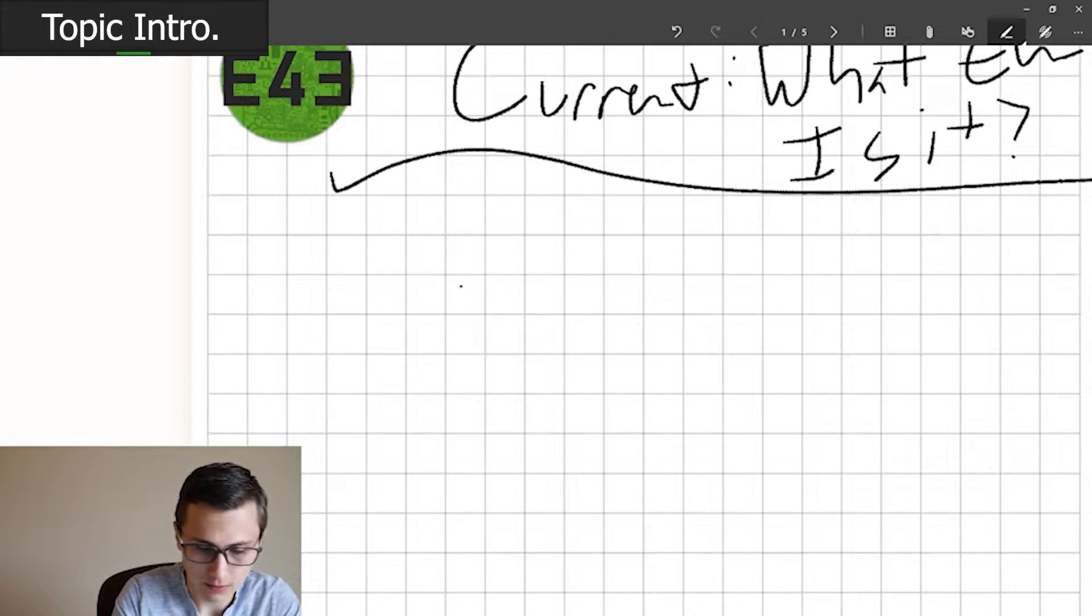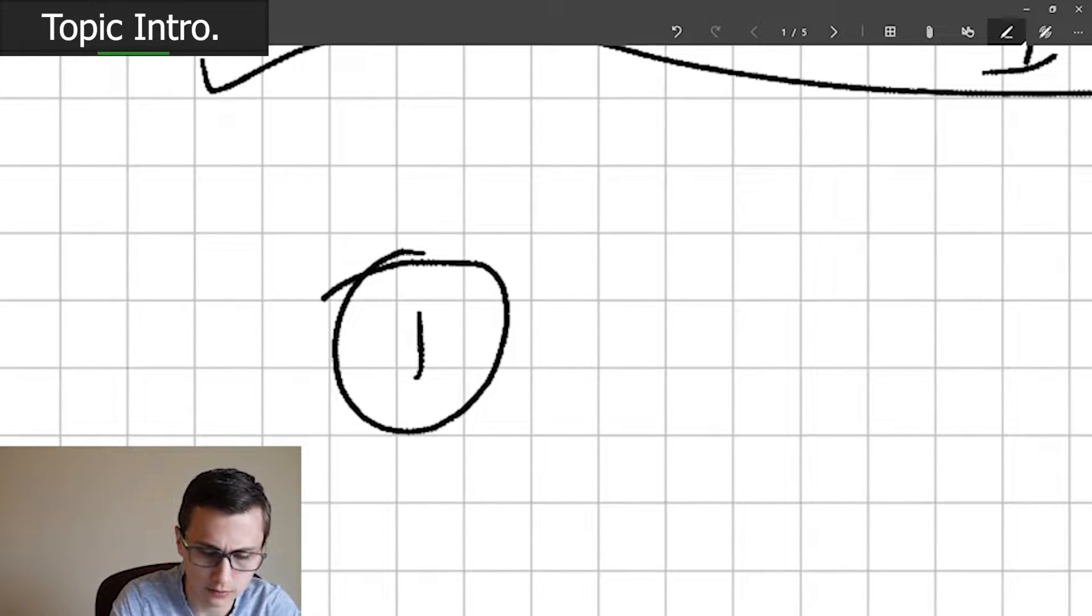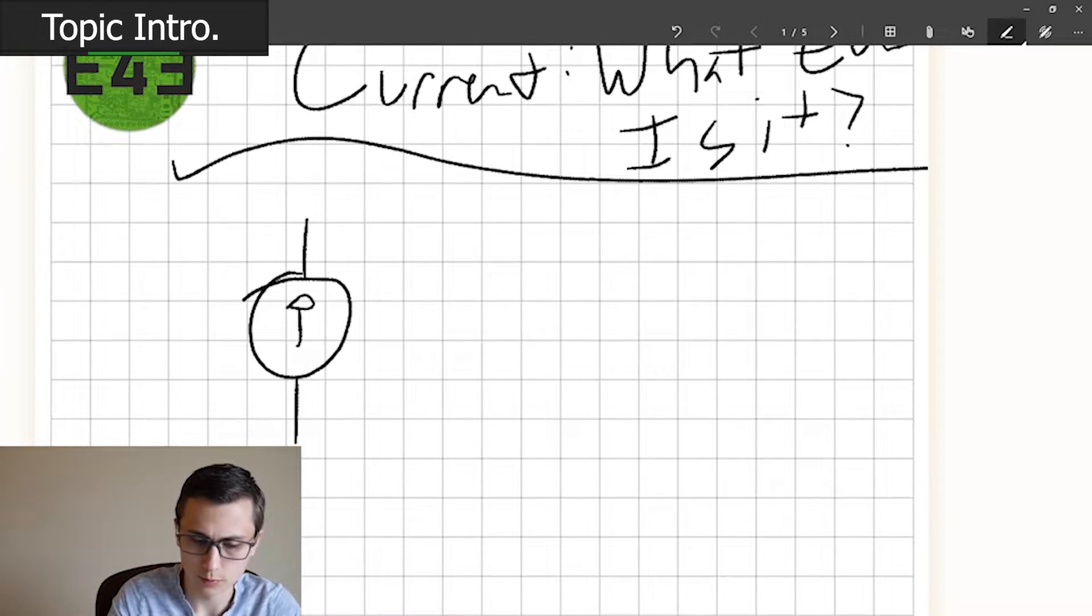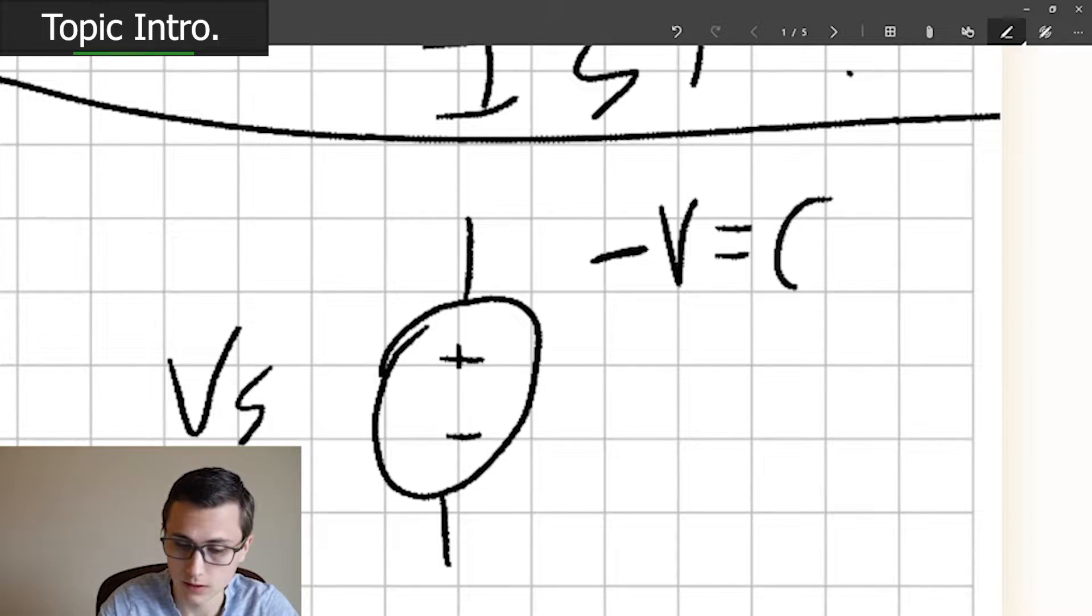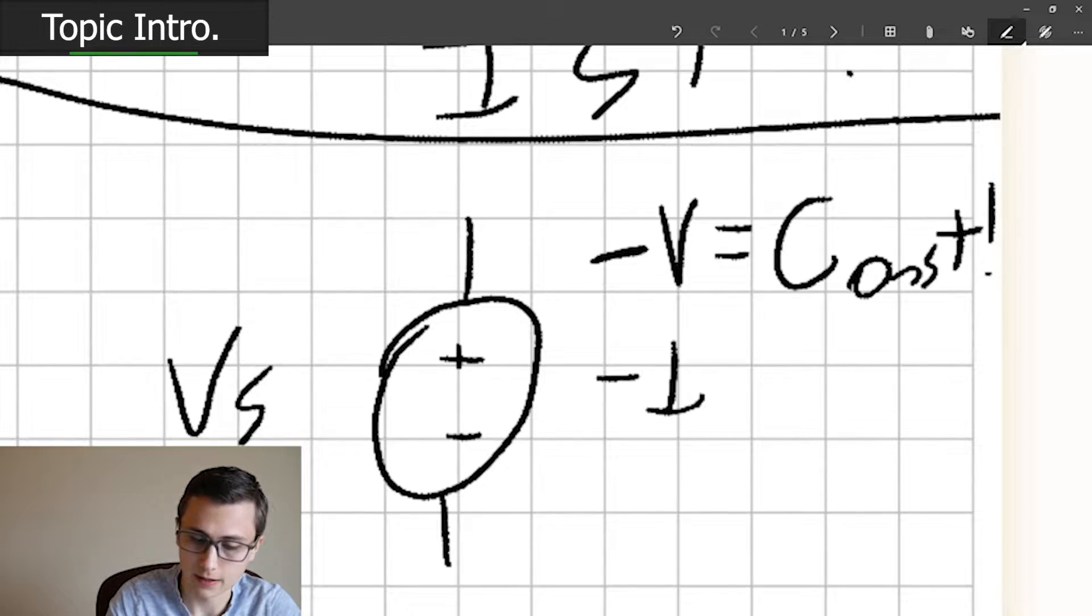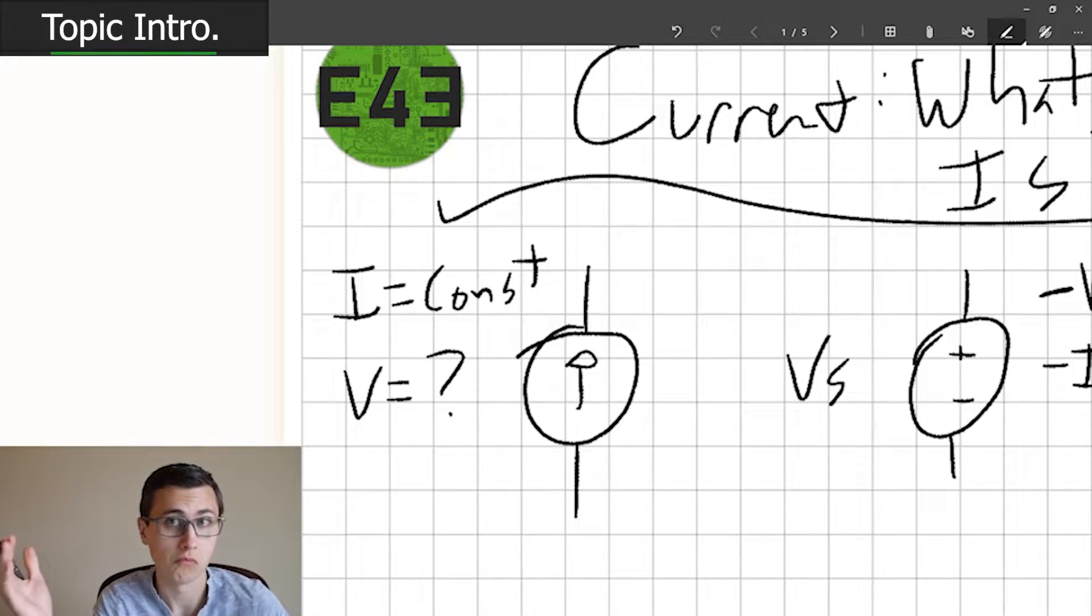What even is a current source? If you look back at our old video on superposition, we talked a little bit about the differences between how you handle current sources and voltage sources. Some simple truths: V is constant, I is unknown. And here we're saying I equals constant and voltage is whatever it needs to be.